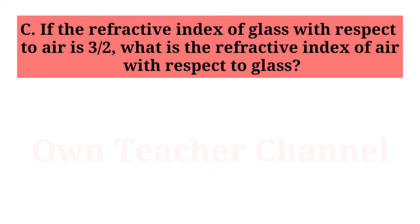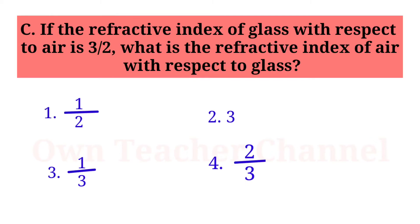(C) If the refractive index of glass with respect to air is 3/2, what is the refractive index of air with respect to glass? Options: 1. 1/2; 2. 3; 3. 1/3; 4. 2/3. The correct answer is 4: 2/3.